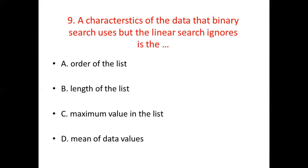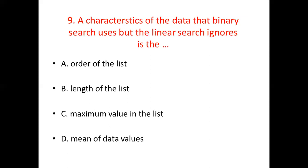Ninth bit: A characteristic of the data that binary search uses but linear search ignores is the dash. Option A, Order of the list. Option B, Length of the list. Option C, Maximum value in the list. Option D, Mean of data values. The answer is Option A, Order of the list.